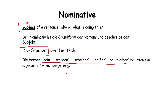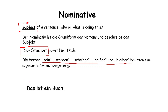Nominative is the subject of the sentence. In a normal sentence like 'Der Student learned Deutsch,' 'Der Student' is nominative and 'Deutsch' is accusative. But if the sentence has verbs like sein, werden, scheinen, heißen, or bleiben, then the whole sentence is nominative — the sentence does not have any object. For example, 'Das ist ein Buch' — here 'ein Buch' is also nominative.